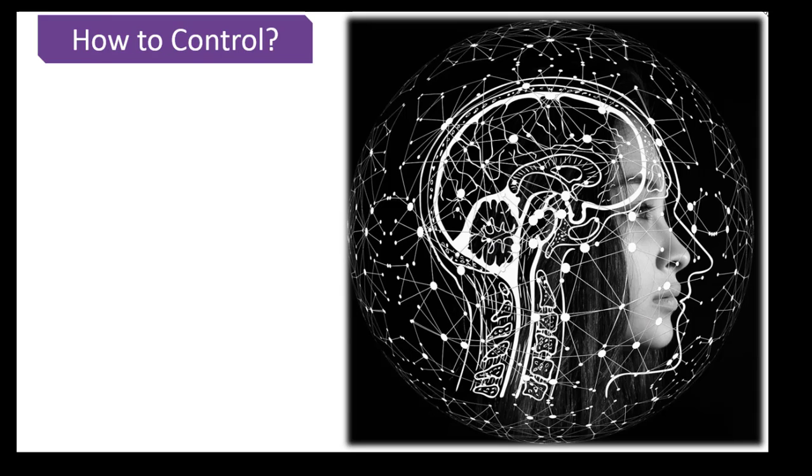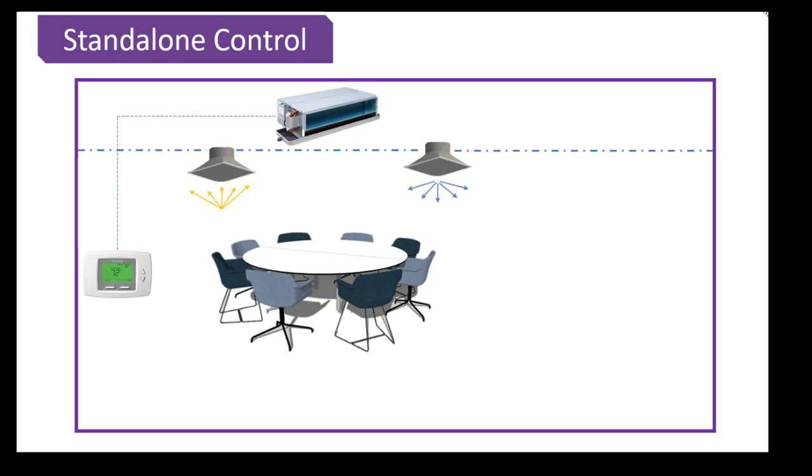Now let's discuss how to control an FCU. There are two ways to control an FCU. First way is to use a local thermostat for standalone control and then other way is to use a DDC controller. Now let's have a look at both of them in details. First of all for the standalone control we are using a local thermostat which is not connected to the BMS so we will not be able to control or monitor this type of FCU from the BMS.